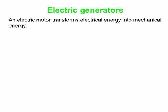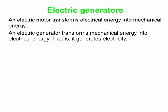So we have in the past talked about an electric motor. An electric motor takes electrical energy and transforms it into mechanical energy, energy associated with motion. An electric generator does the opposite, transforms mechanical energy into electrical energy. In other words, it generates electricity.